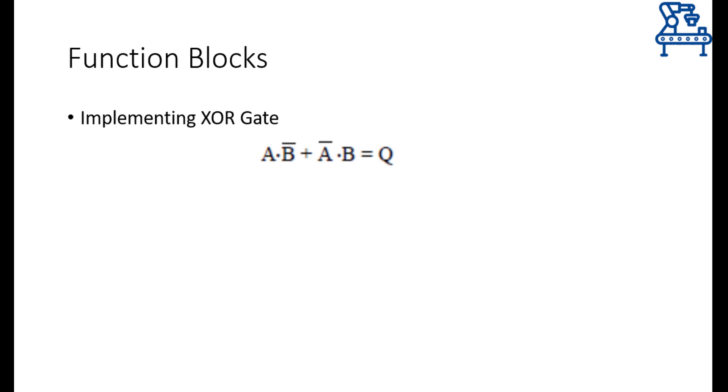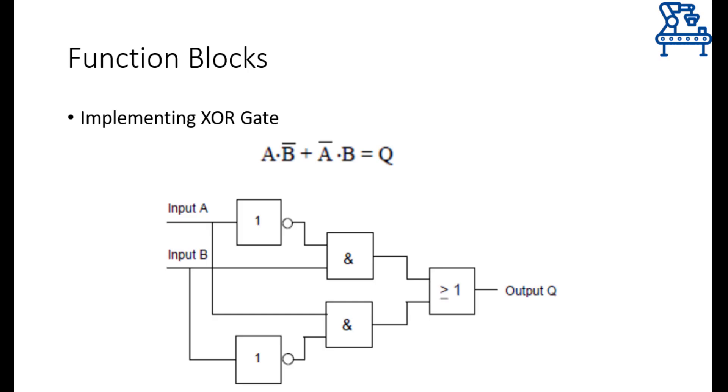As the last example, consider this equation that represents exclusive OR gate. Learners should be able to implement this equation through ladder diagrams and function block diagrams as well. Well, for your reference, this function block diagram represents the exclusive OR gate represented by this equation. You can see that the first part of the equation is being implemented by first inverting B through a NOT gate and then performing AND operation with A. Whereas, the second part is being implemented by inverting A through a NOT gate and performing AND with B. As the last step, the result of AND operations are being passed through an OR gate which is represented by an addition symbol in the equation.